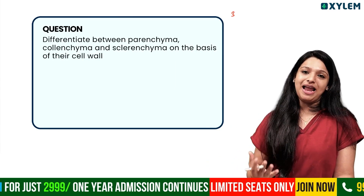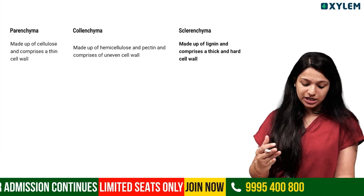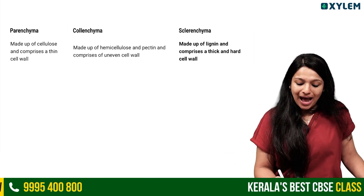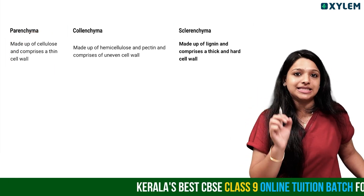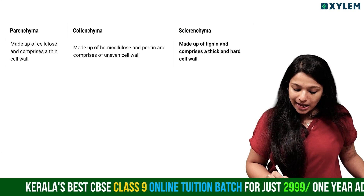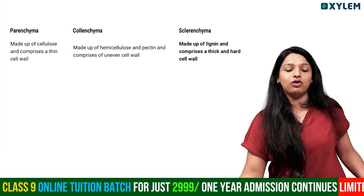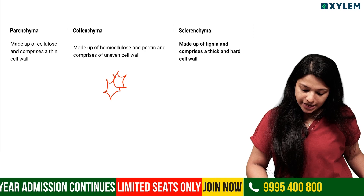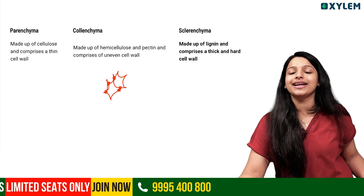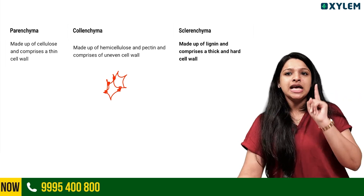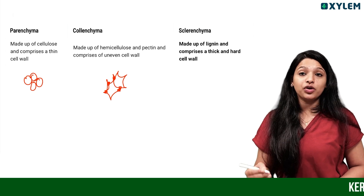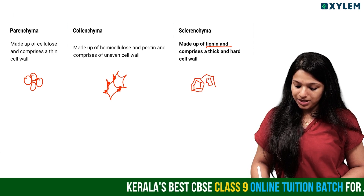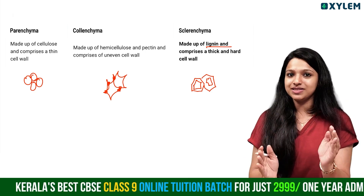First question: differentiate between parenchyma, collenchyma, and sclerenchyma plant tissues — a 3-mark table question. Parenchyma is made up of cellulose and comprises a thin cell wall. Collenchyma is made up of hemicellulose and pectin and comprises an uneven cell wall with corner thickening. Sclerenchyma is made up of lignin and comprises a thick and hard cell wall. This is the difference — 3 marks, easy.